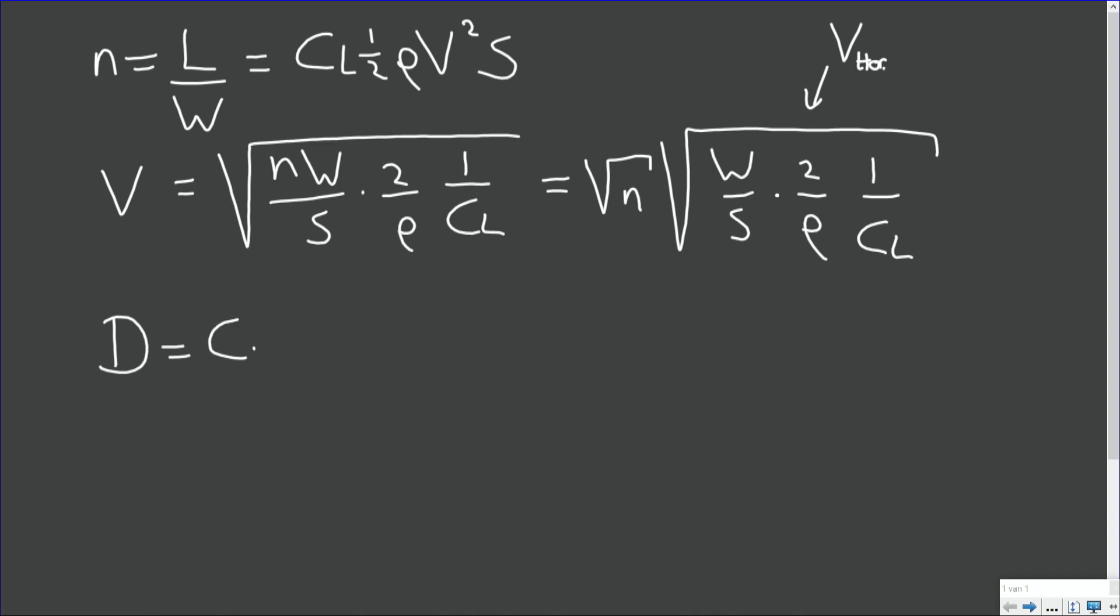Now drag is by definition CD times half rho v squared S. And v squared, of course we know what the airspeed is, so it's CD times half rho times nW over S times 2 over rho and 1 over CL.